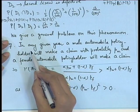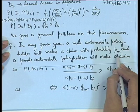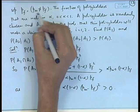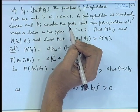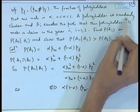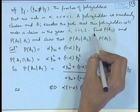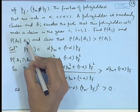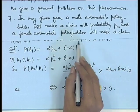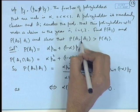In any given year, a male automobile policyholder will make a claim with probability P_m and a female policyholder with probability P_f. In general, P_m ≠ P_f. The fraction of policyholders that are male is alpha (between 0 and 1). A policyholder is randomly chosen and A_i denotes the event that this policyholder makes a claim in year i, for i = 1, 2. What is P(A1)? What is P(A2|A1)? Show that P(A2|A1) > P(A1) — the probability of a repeat claim increases.